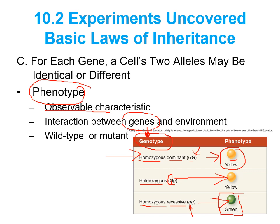As you're doing your reading, you might also come across the term wild type. Wild type is what they like to call the most commonly seen version of the gene. And then a mutant is any type of variation that steps away from what the wild type was meant to be.